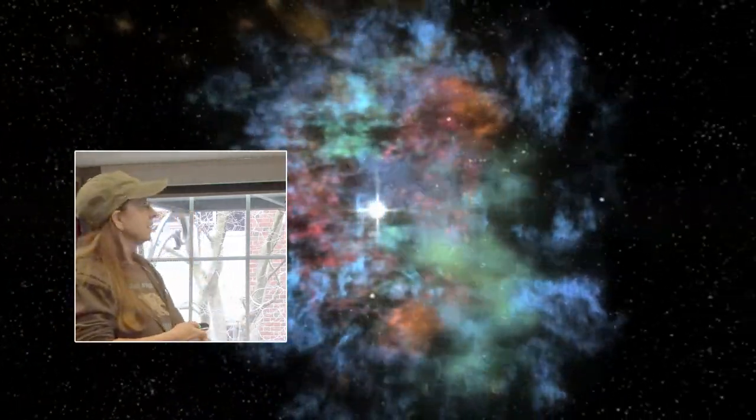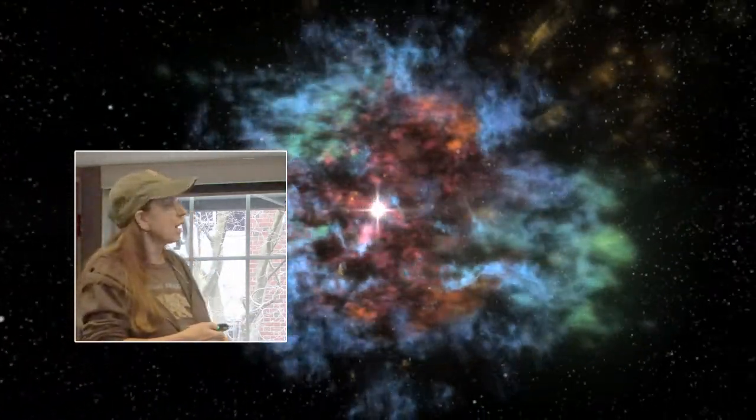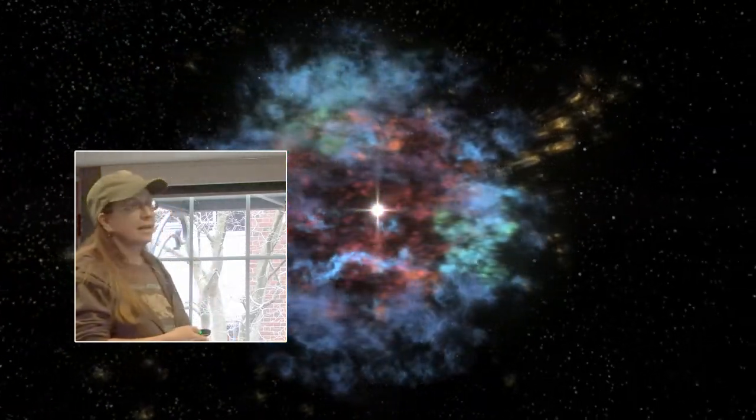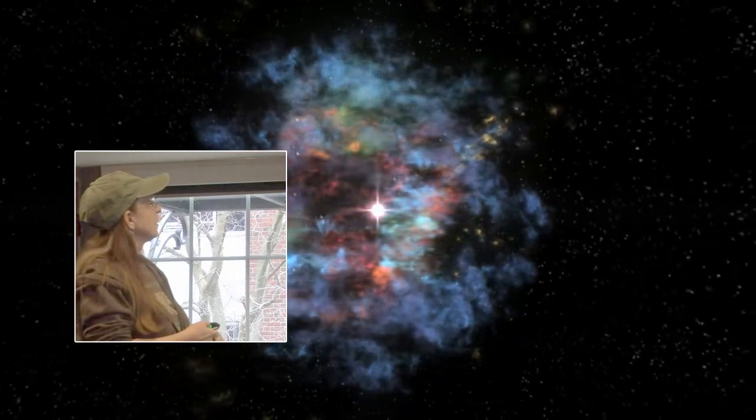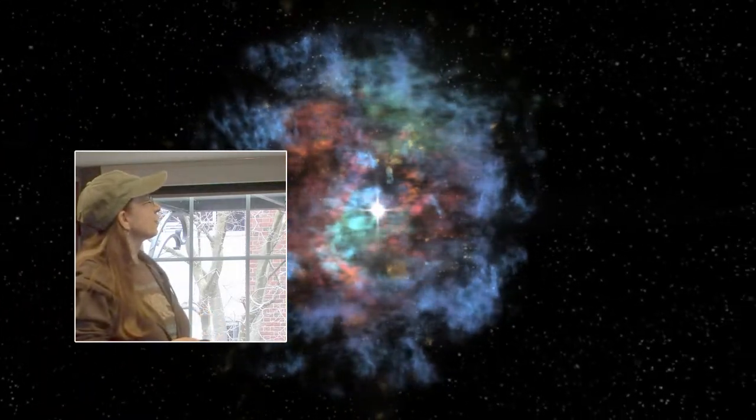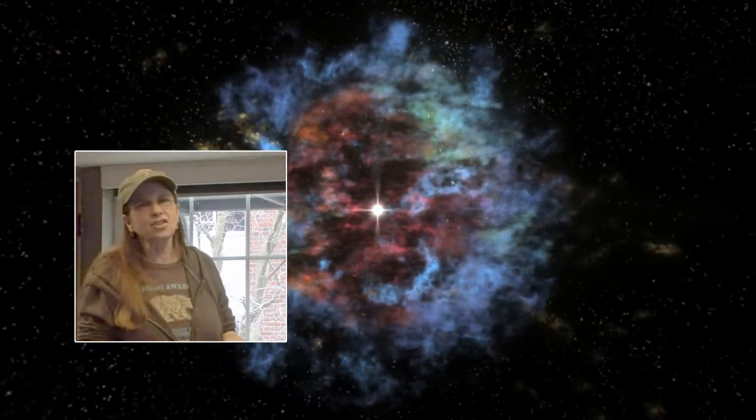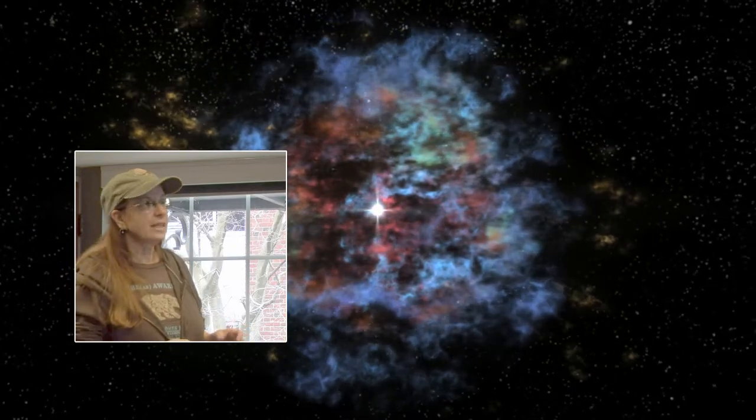In this one, the Chandra data is blue, and that's the shock wave. The iron is also Chandra X-ray data. The green is the iron. And Spitzer is the red. And the orange and yellow is a combination of infrared and optical and X-ray data.